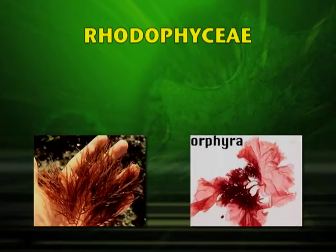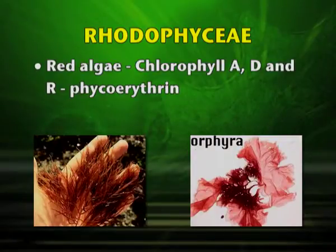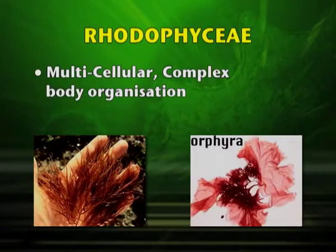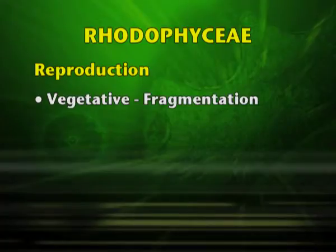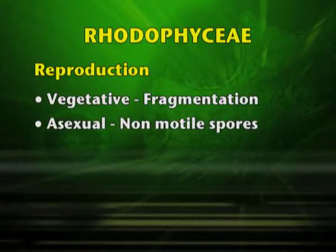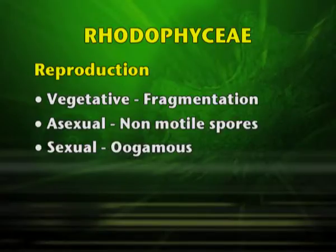Rhodophyceae are generally known as red algae and they contain the pigment chlorophyll A, D and R-phycoerythrin. The cell wall is made up of cellulose. They are multicellular and have a complex body organization. The food stored is in the form of floridian starch. Vegetative reproduction is by fragmentation; asexual reproduction is by non-motile spores; and sexual reproduction is oogamous.